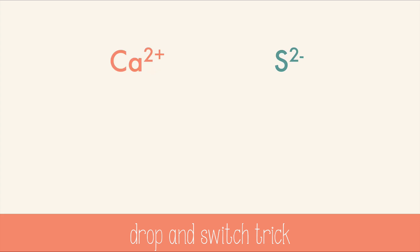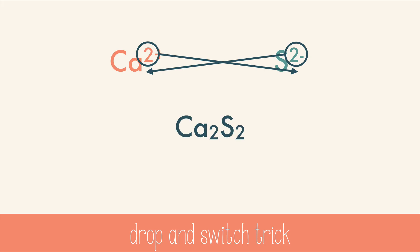Let's try another one: calcium two plus and sulfur two minus. Drop and switch, and you get Ca₂S₂. But really, that's actually a little redundant — you don't need those twos. You can simplify this to just CaS, calcium sulfide.